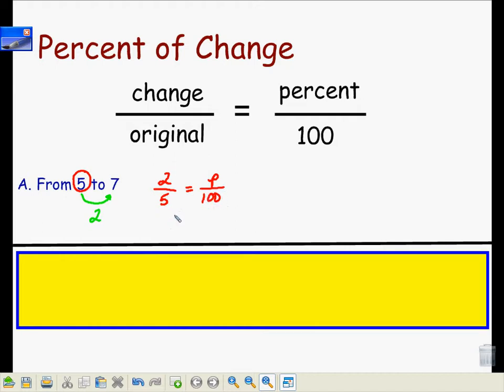Given that I have a proportion-style problem with one fraction equal to another, I can now cross-multiply to solve. Cross-multiplying, the 2 times the 100 gives me 200, and the 5 times the P gives me 5P. I now have 200 is equal to 5P.